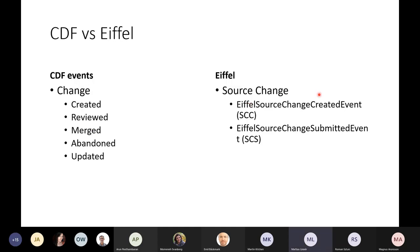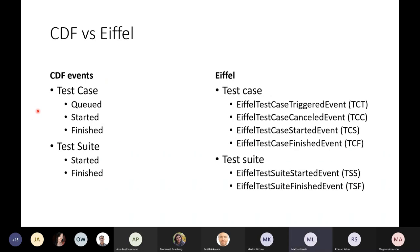In Eiffel we have the source change created event and the source change submitted event. The current thinking here is a little bit more towards a change as we have in Gerrit — our pull request as we have in GitHub. So there's thinking around events for when a pull request is created, reviewed, merged, branched, and updated. It's more concrete events connected to a pull request, which we call a 'change' here.